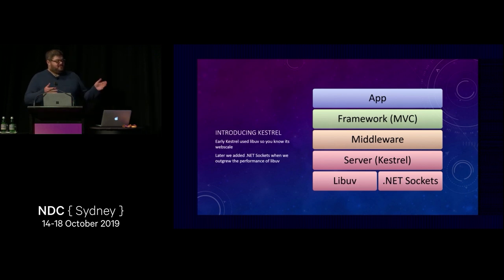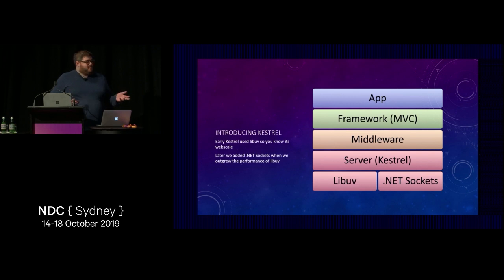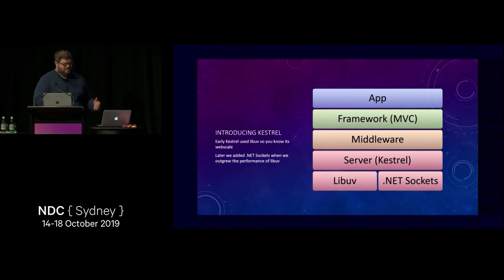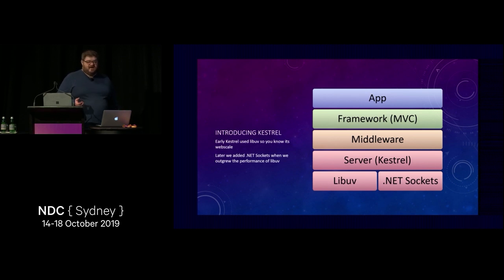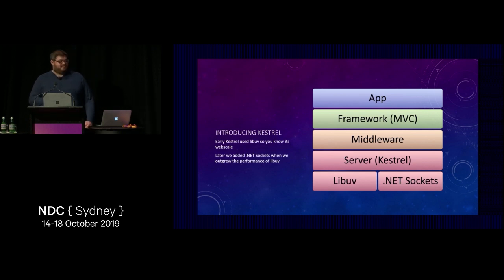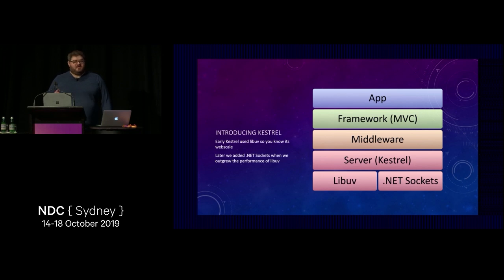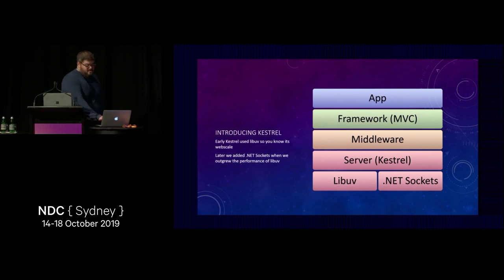At the bottom of that diagram is LibUV — the C library at the core of Node.js. In V1 we took the library at the heart of Node and made it the cornerstone of our server because it had a good implementation and was cross-platform. But as we worked on Kestrel and went on our performance journey, we outgrew LibUV's performance — it became the bottleneck. So we replaced LibUV with .NET Sockets and did a bunch of work to make their performance great. That gets us to where we are right now.